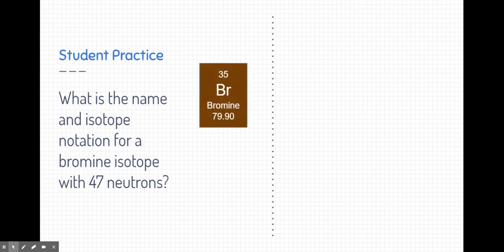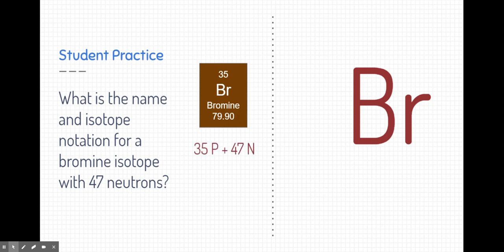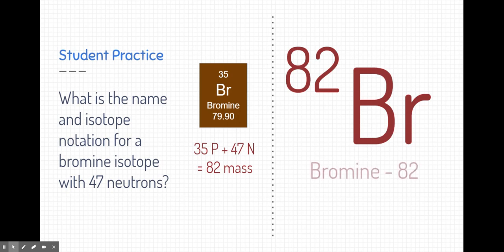Here's bromine found on the periodic table. We need it because we need to know the symbol for bromine in order to do isotope notation. And we also need the number of protons, but we don't want the atomic mass. This is an isotope of bromine, so we're not going to look at the mass as shown on the periodic table. This isotope has a different mass. We get the mass by taking the number of protons, which is always 35 for bromine, and we add it to the number of neutrons, which is new for this isotope. So 35 plus 47 is a mass of 82. So this bromine has a mass of 82. This is an isotope of bromine, and we also might call it bromine-82.